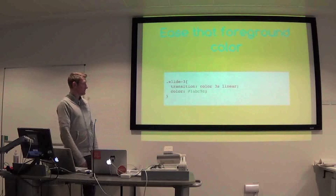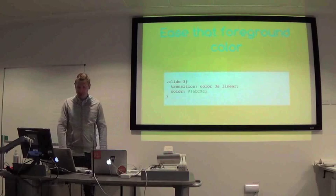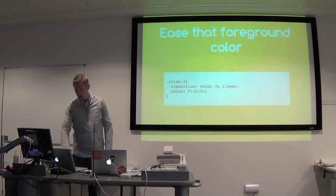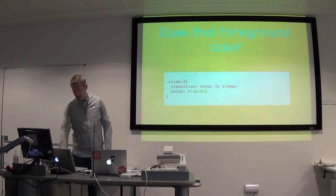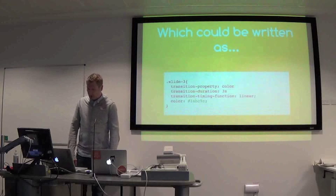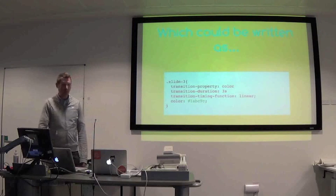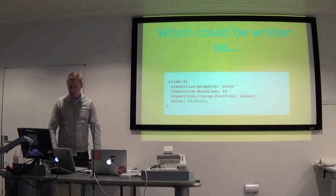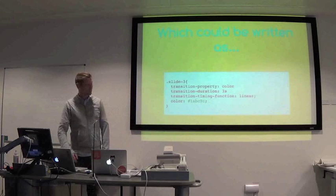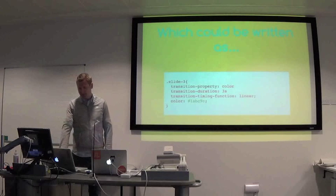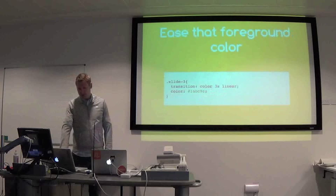We can also transition the foreground color, just to show that it works with something completely different. This time it's a linear transition and I've made it longer. So I'll change that — blue, green, blue. You can also split it up when you have a lot of CSS, so you can have transition-property, duration, and timing-function separately, rather than doing them in the shorthand single way.